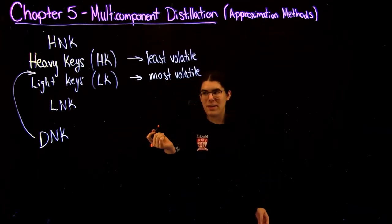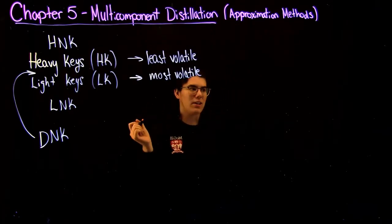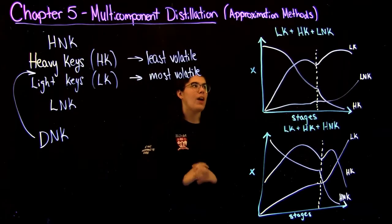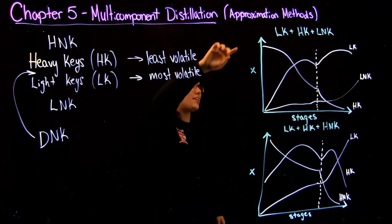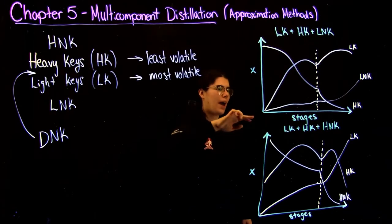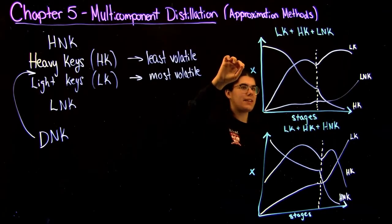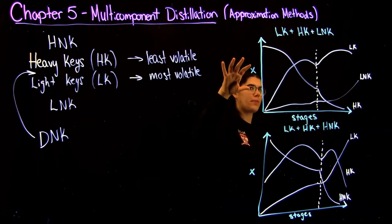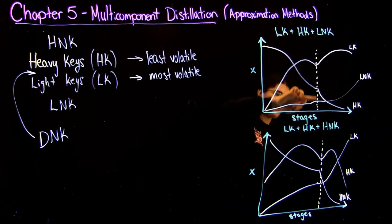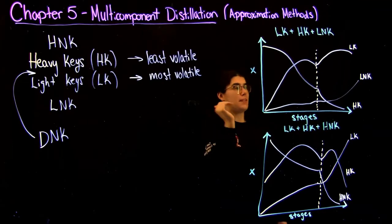So something you should also know is how these keys are going to be distributed within your distillation column. I'm going to draw some graphs and then talk about them. So here you have a system that has a light key, a heavy key, and a light non-key. The x-axis here is the stages of your column, and the y-axis is the composition of that particular point in the stage. This dotted line represents a feed stream coming in, because sometimes a feed stream comes in the middle of your column.